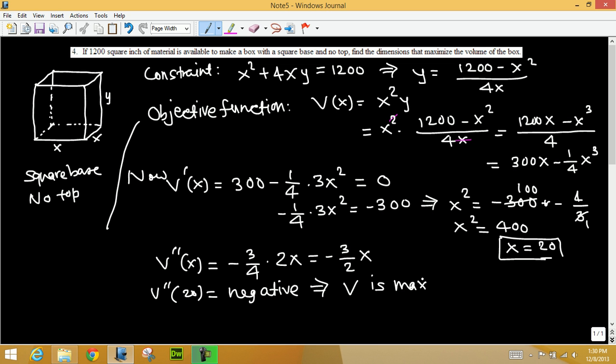V has maximum value at 20. We plug in x equals 20 here to get y. Then y equals, just plug in your calculator, 20 squared is 400, 1200 minus 400 is 800, divided by 4 times 20 is 80. So 800 divided by 80, that's 10. Thus the dimensions are